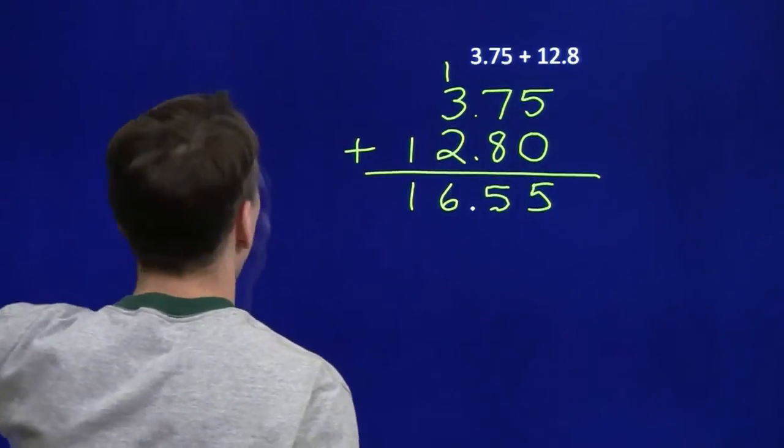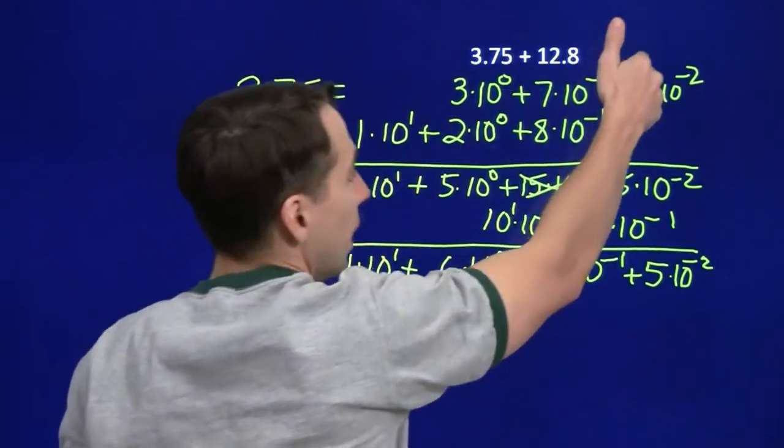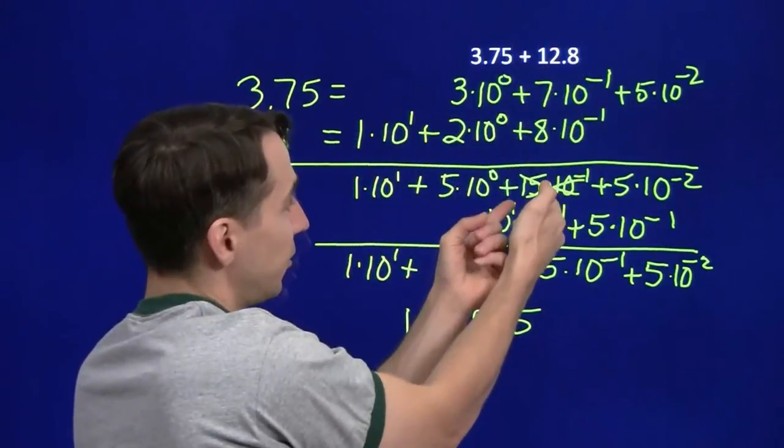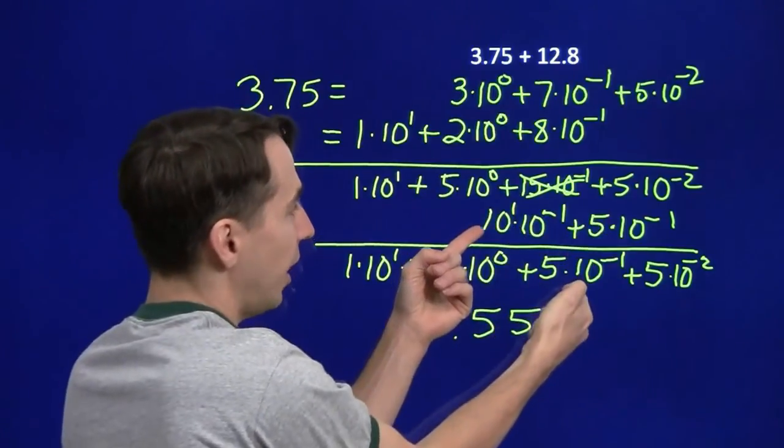This is just a shorthand way of doing this. All we did here was bring down the hundredths, combine the tenths. 7 tenths, 8 tenths is 15 tenths, which we broke up into another 1 and 5 tenths.